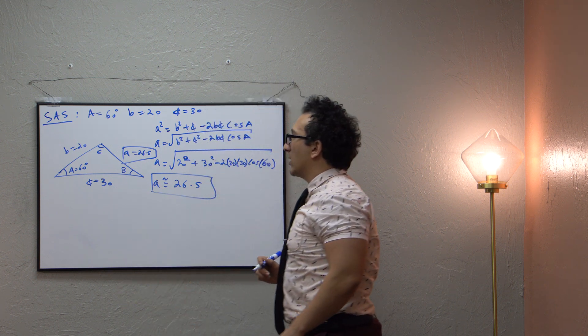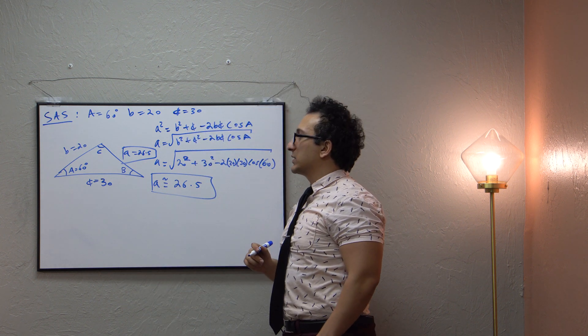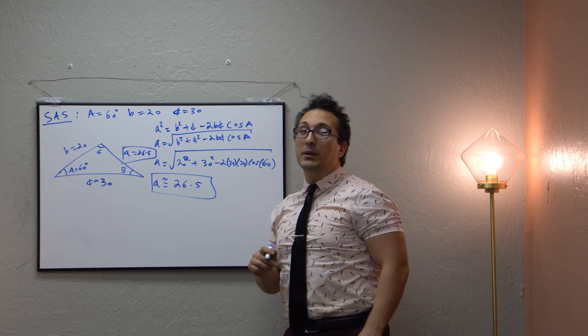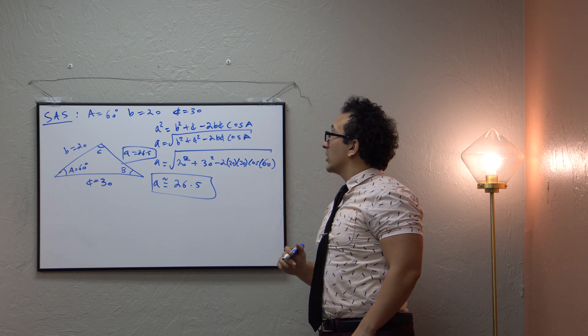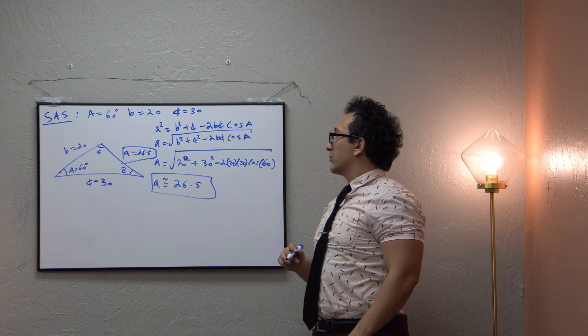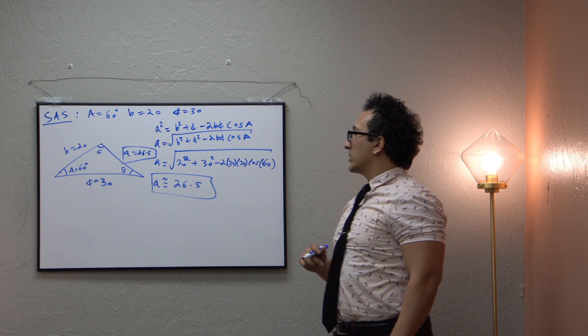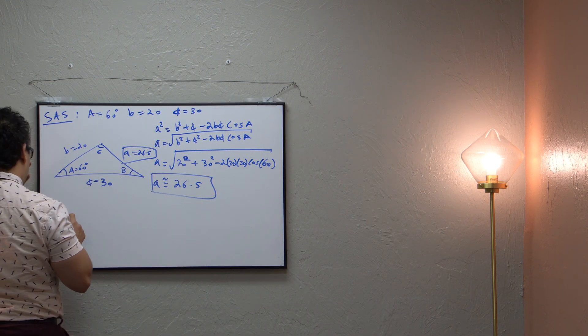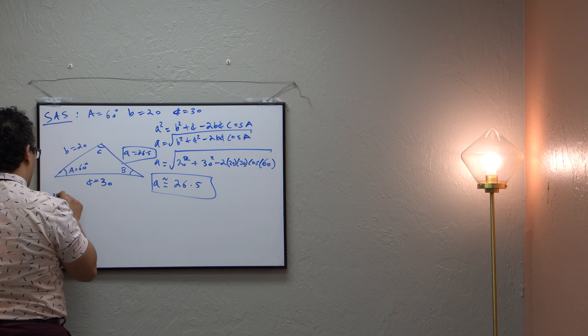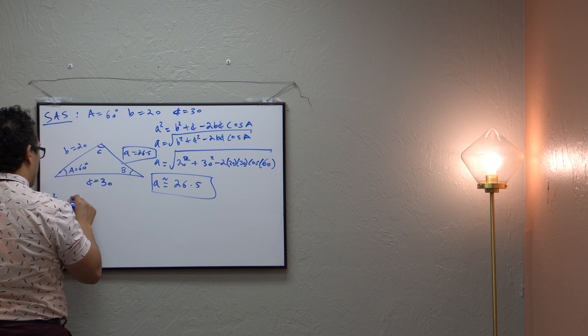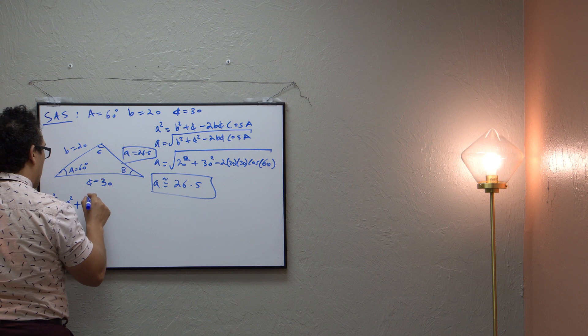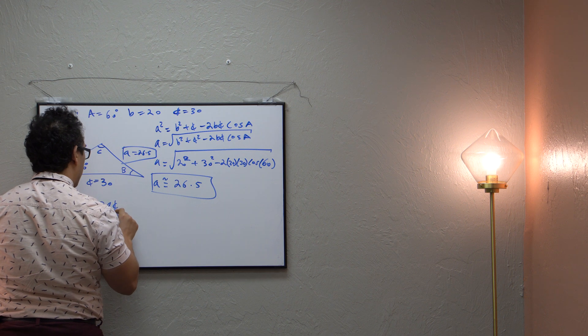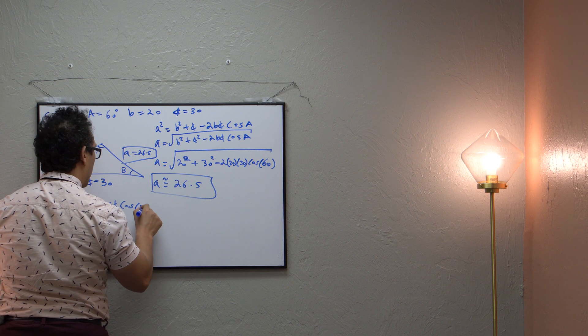Now we have to solve for these two values. So we know little a is 26.5. Now, we must solve for the angle capital C and the angle capital B. We can utilize the law of cosines precisely to do this. Notice that one of them, to solve for b, let's say, little b squared is equal to little a squared plus little c squared minus 2ac cosine of capital B.